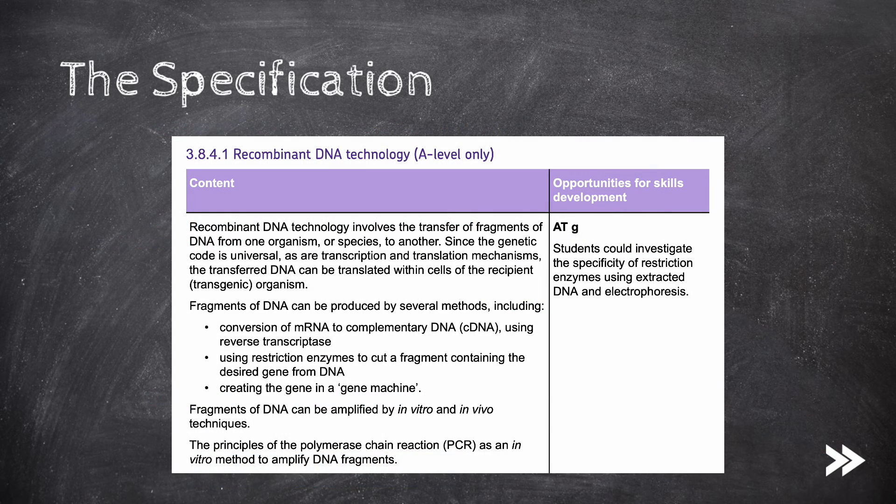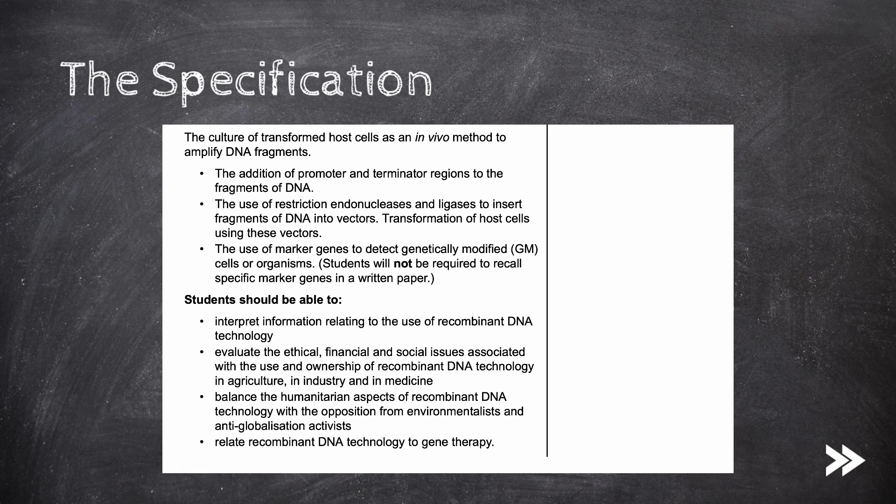Great, that would be recombinant DNA technology covered. We have covered how recombinant DNA technology involves the transfer of fragments of DNA from one organism or species to another. We now also know that since the genetic code is universal, as are transcription and translation mechanisms, the transferred DNA can be translated within the cells of the recipient, i.e. transgenic organism. We have covered the different ways in which DNA fragments can be produced, as well as how fragments of DNA can be amplified by in vitro and in vivo techniques. We have also covered the principles of PCR, and how it amplifies DNA fragments in vitro. We have also covered how DNA fragments can be amplified in vivo using a culture of transformed host cells.